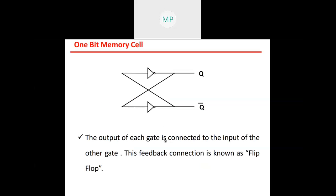In a one-bit memory cell, the output of each gate is connected to the input of the other gate. The output of Q is connected to the input of the Q-bar gate, and the output of the second gate is connected to the input of the first gate. This feedback connection is known as a flip-flop. Those circuits are called flip-flops because the output of each gate is connected to the input of the other gate.